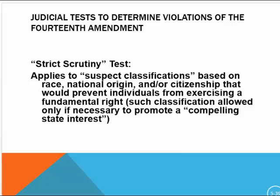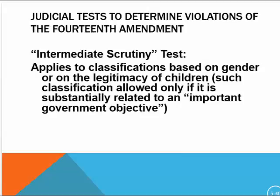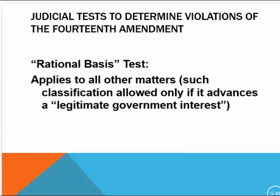If the government passes a law that treats someone differently because of race, national origin, or citizenship, courts analyze that very carefully under strict scrutiny. For other areas such as gender or legitimacy of children, we apply only intermediate scrutiny. If there's an important government objective to treating genders differently, we allow it — not strict scrutiny, but an intermediate level of review. Finally, rational basis applies to most other regulations.